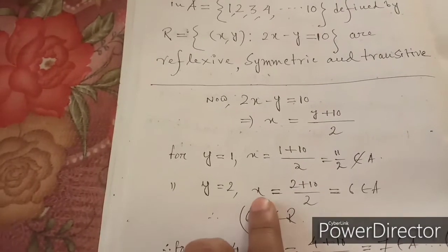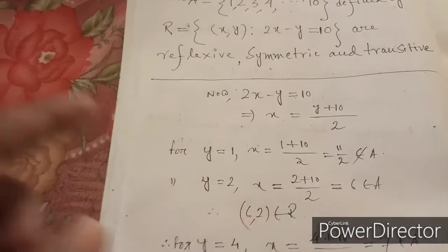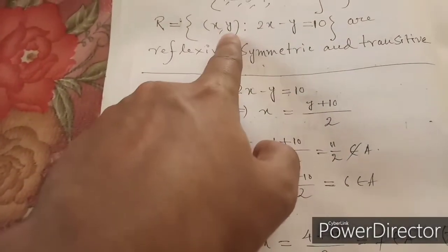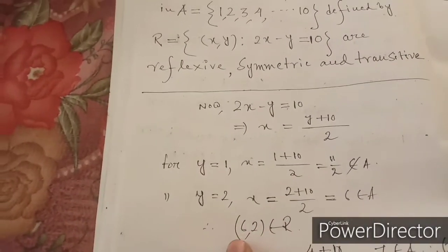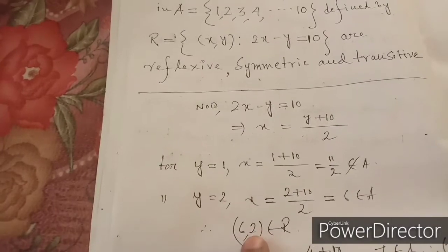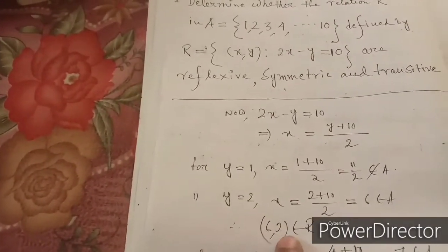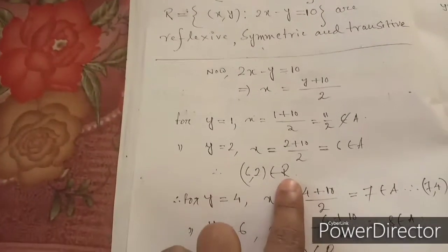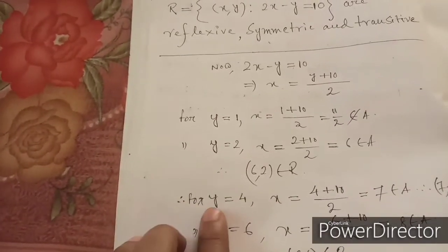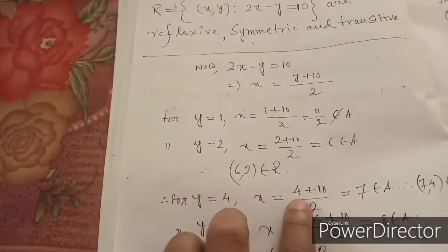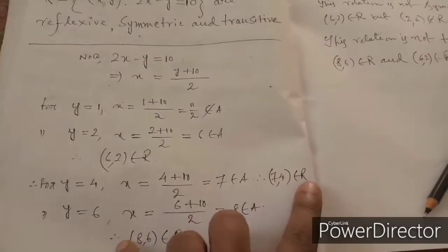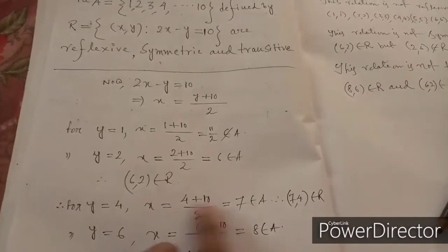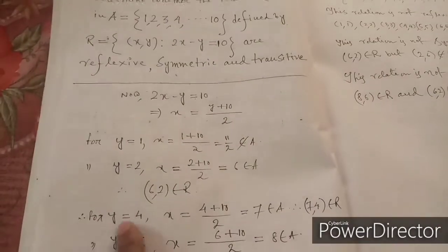In the ordered pair (x, y), x is the first element and y is the second. So x = 6 and y = 2, giving us (6, 2) belongs to R. Similarly, for y = 4: x = (4 + 10) / 2 = 7, which belongs to A, so (7, 4) belongs to R.